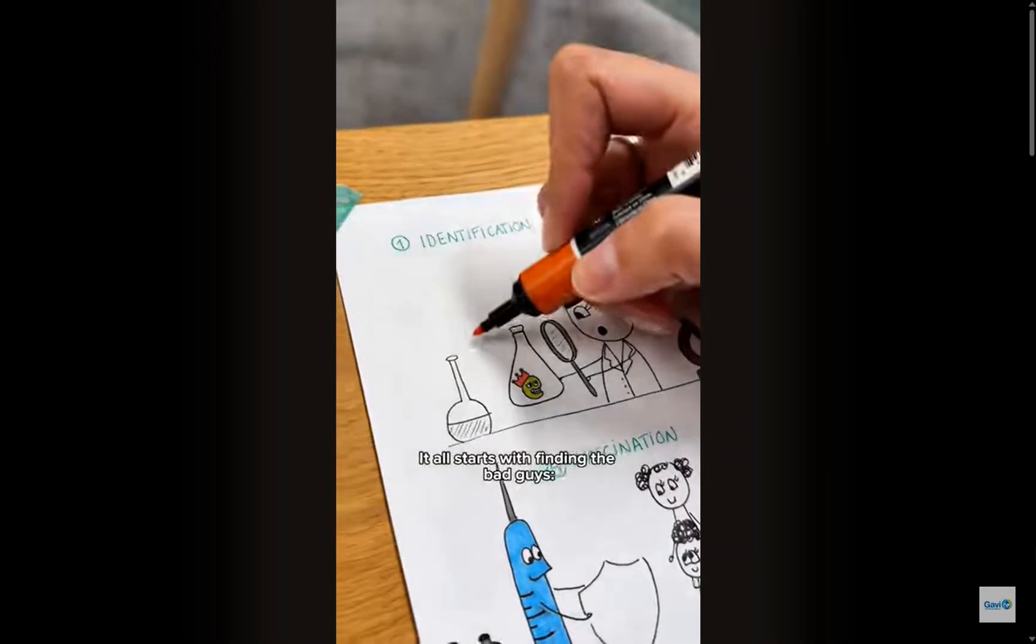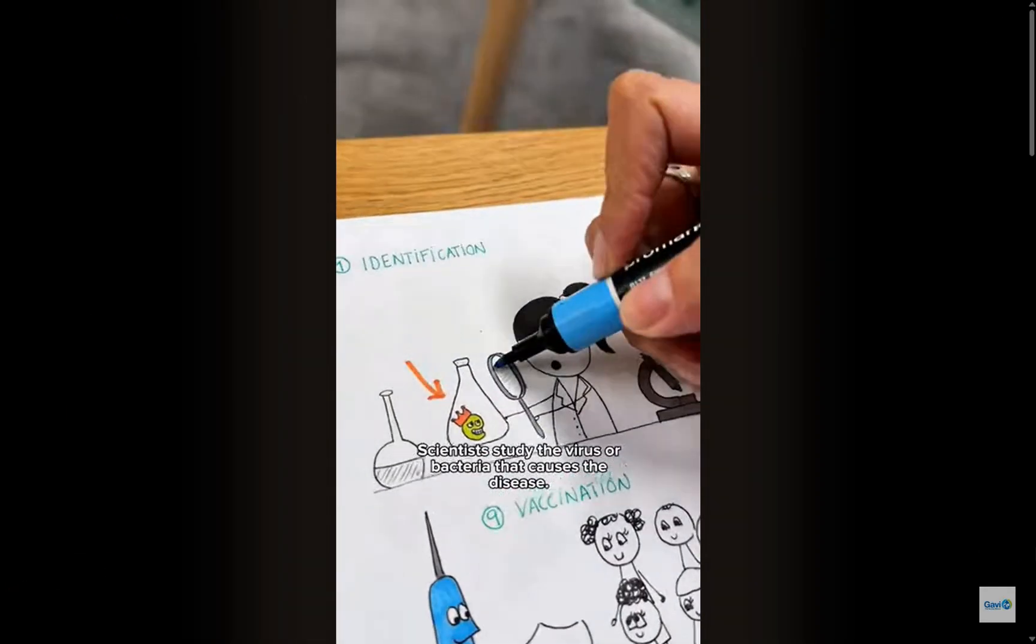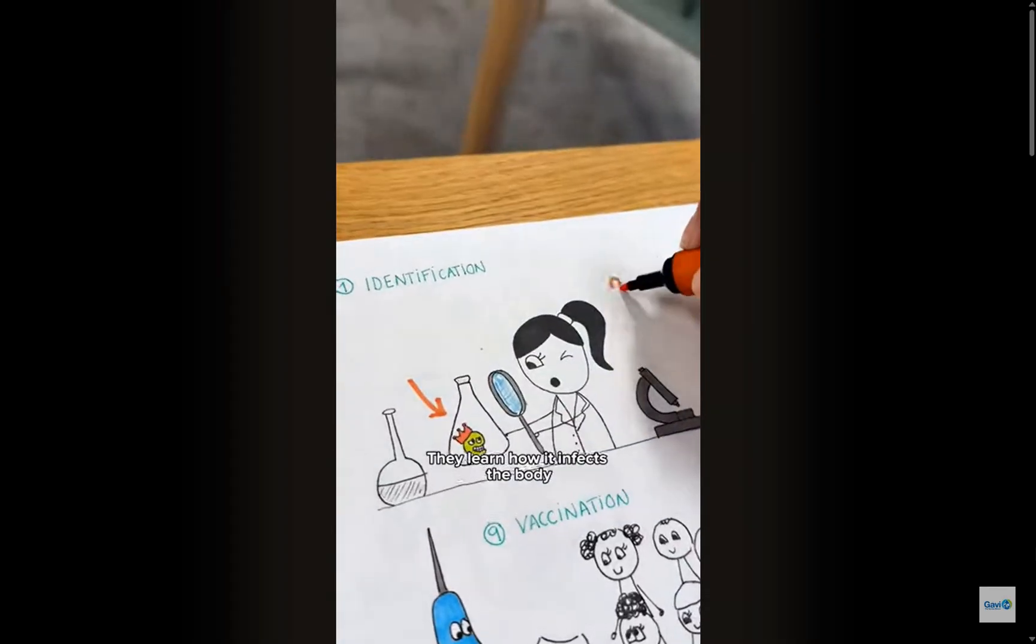Ever wondered how a vaccine is made? Let me skip it up for you. It all starts with finding the bad guys, the germs. Scientists study the virus or bacteria that causes the disease. They learn how it infects the body so they can figure out how to stop it.